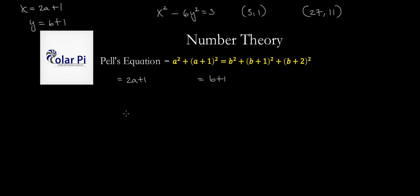So we're saying that 27 is x and then 11 is y. So what does that do? That means that we'll have 27 - 1, which is 26 = 2a, so a is equal to 13. And then b will have to be 10. So what does that mean? That means 13² + 14² is equal to 10² + 11² + 12². Isn't that really cool? I thought so.